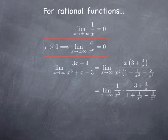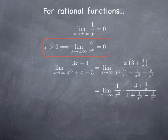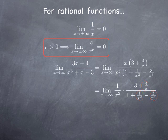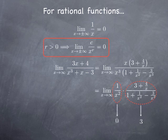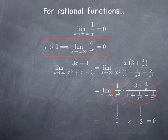The x over x³ rewrites as 1/x², at least for x non-zero, and we're interested in what happens for x large. We obtain the limit of (1/x²) multiplied by the fraction (3 + 4/x) / (1 + 1/x² - 3/x³). These terms are all of the form a non-zero constant divided by a positive power of x, and therefore they all go to 0 as x goes to infinity. So this fraction goes to 3/1 = 3, while 1/x² goes to 0. Therefore, the limit is 0 times 3, which is 0.